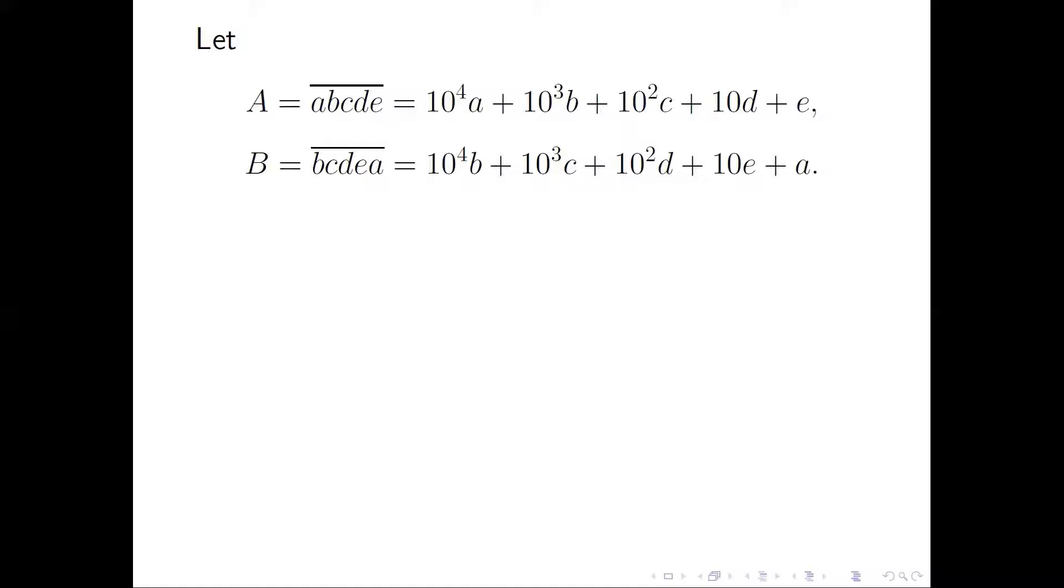We may guess A and B are congruent with modular 41, but actually this is not the case. If you try some simple numbers like A equals 1, 2, 3, 4, 5, and B would be 2, 3, 4, 5, 1, you would observe that doesn't work.